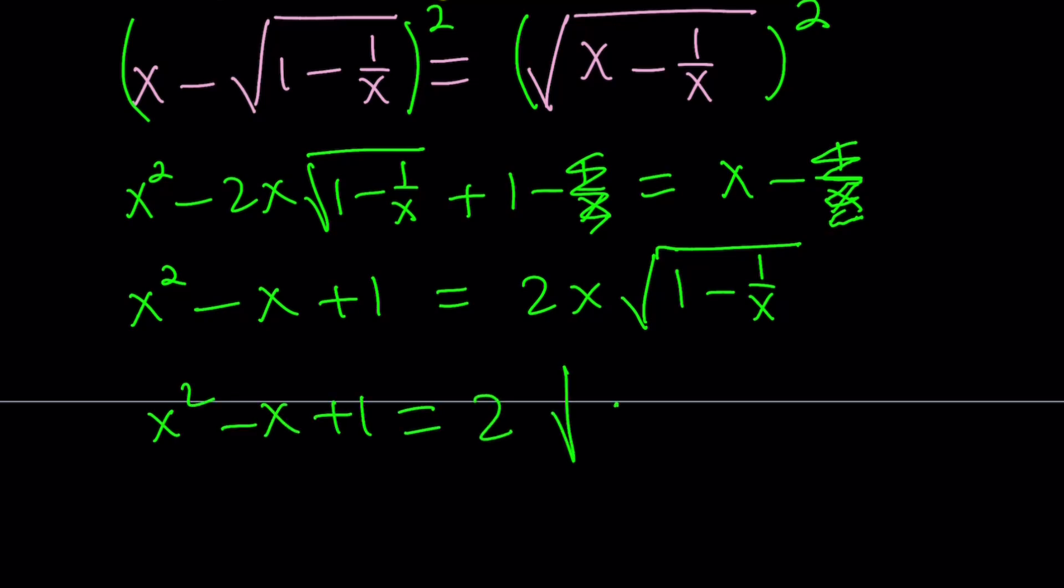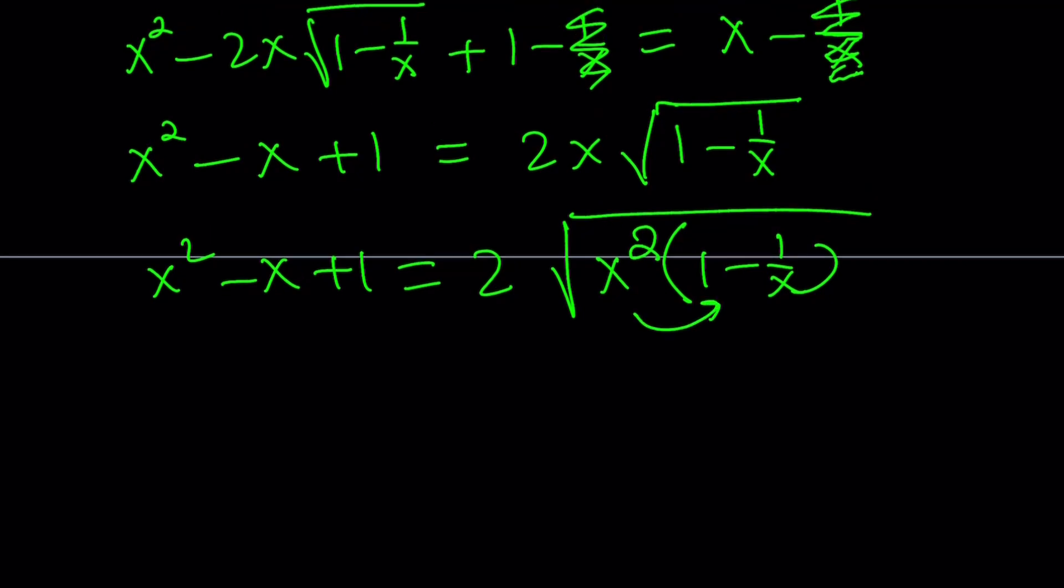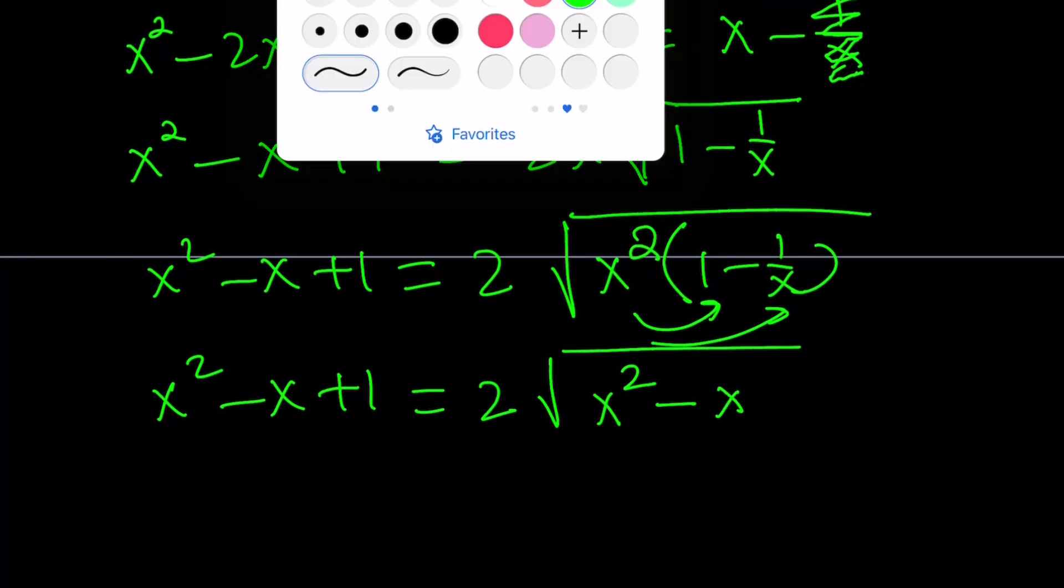It's going to look like this: 2 times the square root of x squared times 1 minus 1 over x. And now what I'm going to do next is distribute the x squared. If you distribute the x squared, you're going to get x squared minus x plus 1 on the left equals 2 times the square root of x squared minus x.